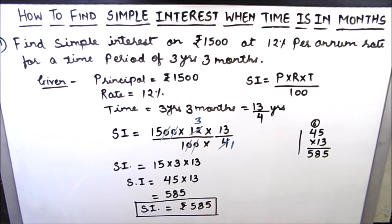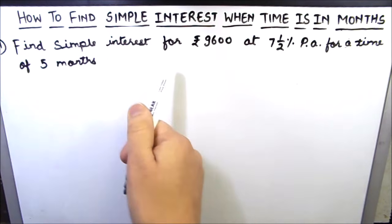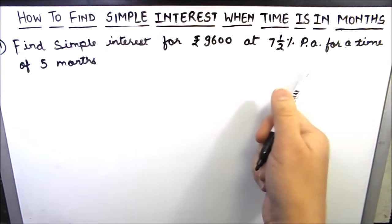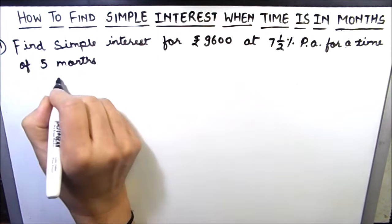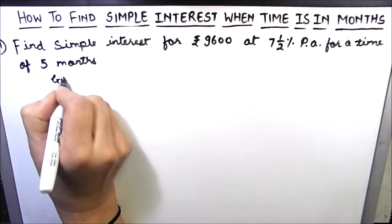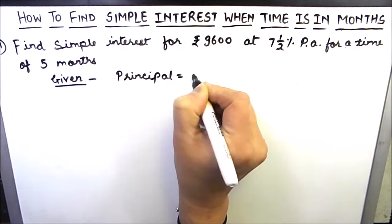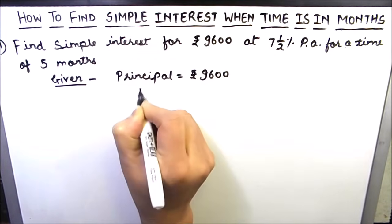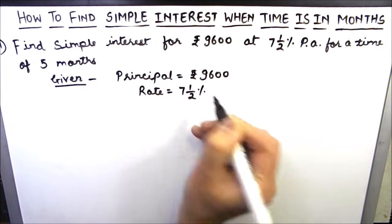To understand this more clearly, let us solve one more example where time is in months. Our second question is: find simple interest for rupees 9600 at 7 and a half percent per annum for a time of 5 months. Let us write what is given: principal amount is rupees 9600.